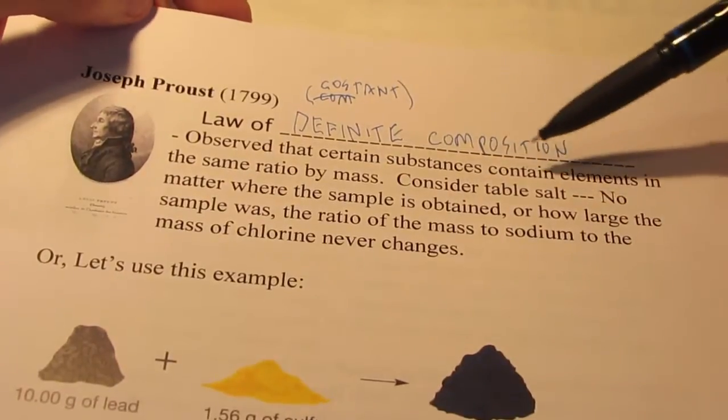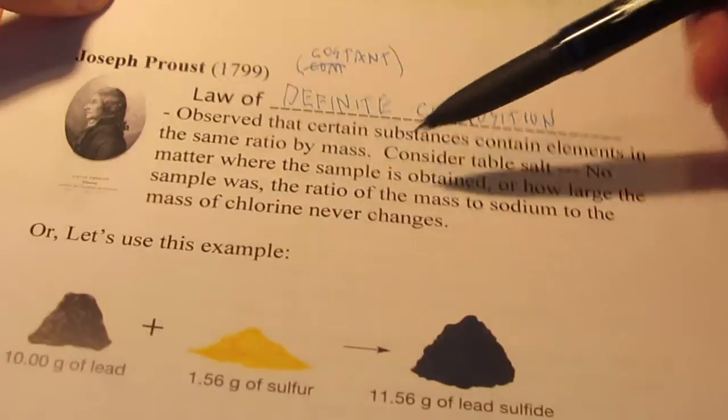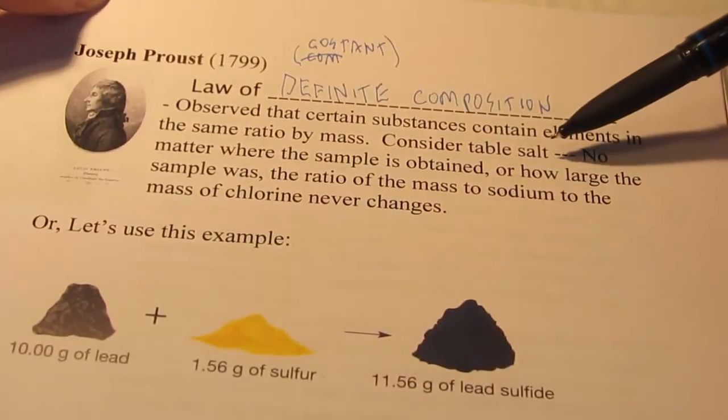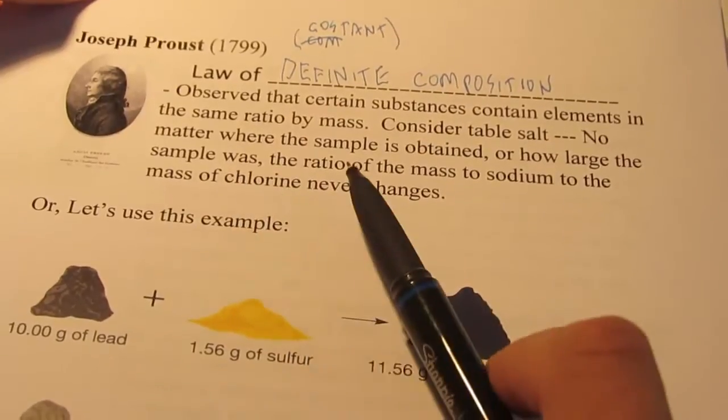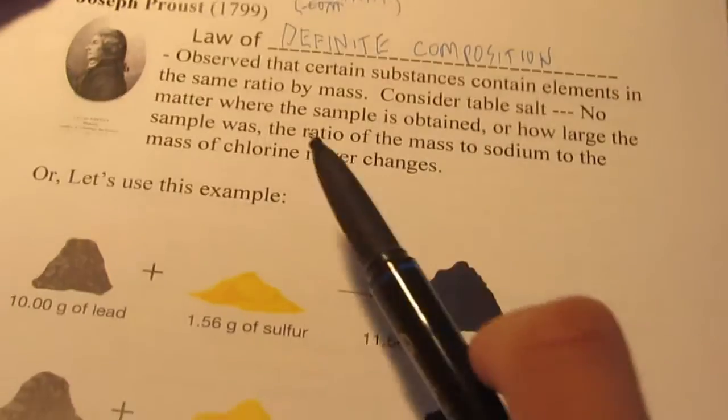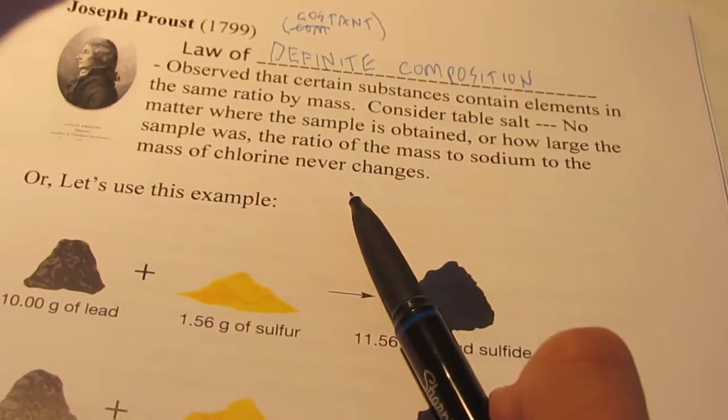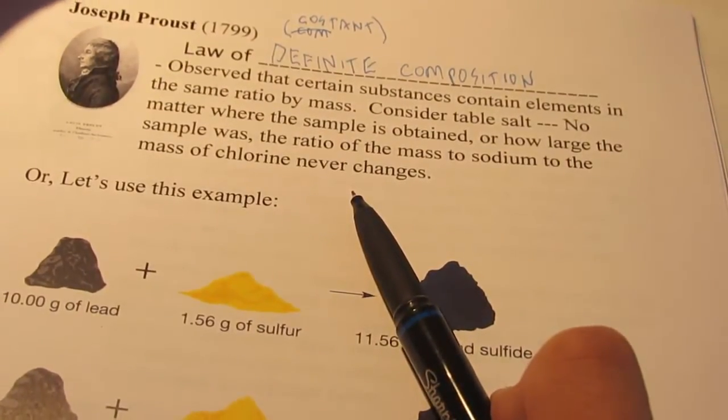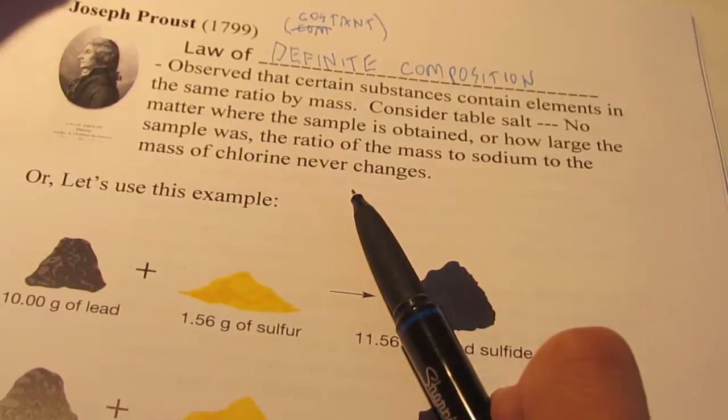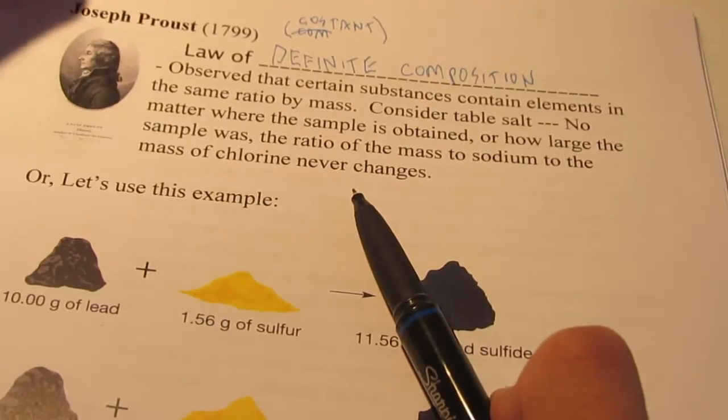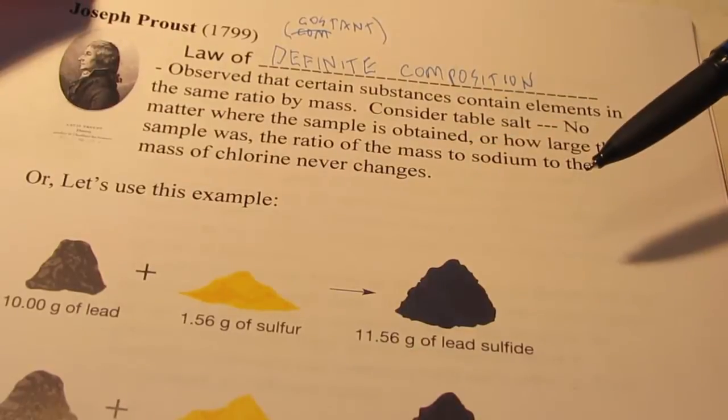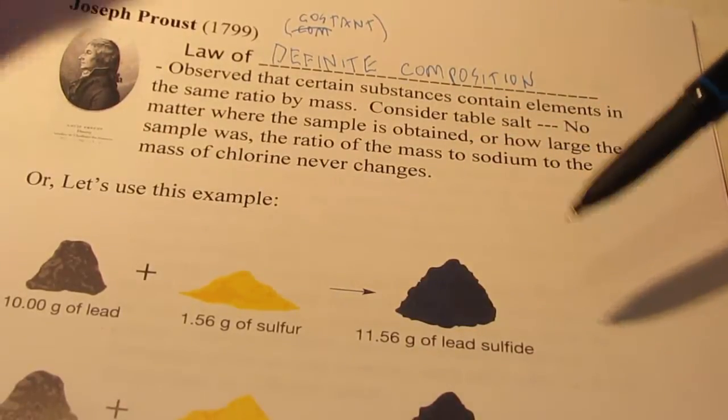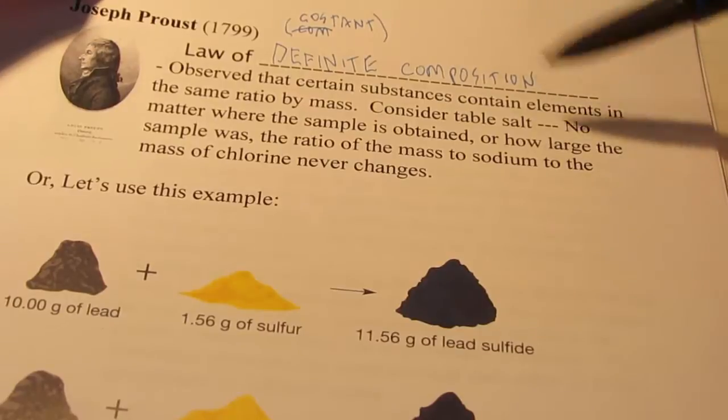He observed that certain substances contain elements in the same ratio by mass. If we consider table salt, no matter where the sample is obtained or how large the sample was, the ratio of the mass of sodium to the mass of chlorine never changes. So we could collect that salt from the Great Salt Lake and analyze the amount of sodium to chlorine by weight, and we could collect some sodium chloride from the Dead Sea, or we could collect it from a salt mine somewhere and analyze the amount of sodium compared to chlorine, and that ratio would never change, no matter where that was collected or how big the sample was.